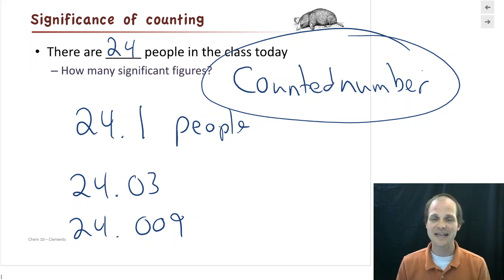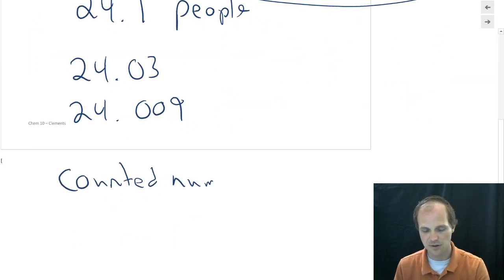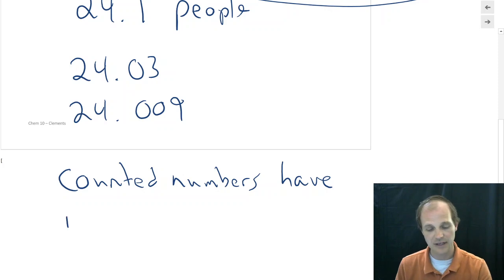So if we can count something, we call it a counted number. Now, counted numbers are interesting because counted numbers... How many sig figs in a counted number? And it turns out they have infinite sig figs.